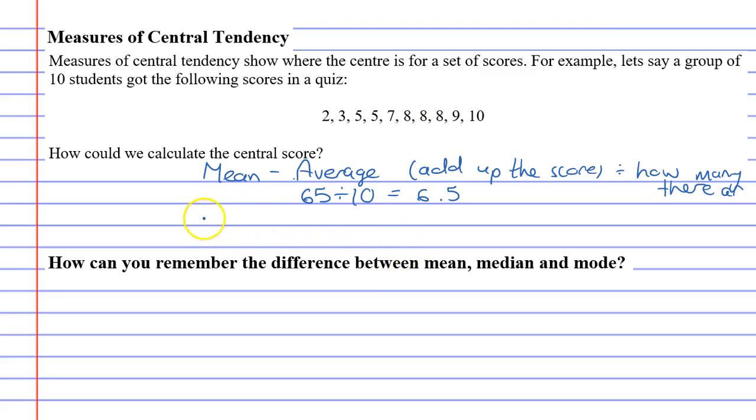Another method for finding the central score is called the median. Median basically means the middle score. To do that, you need to put the numbers in order from smallest to largest. The middle is right here between the 7 and the 8 because there are 5 numbers on each side. Halfway between 7 and 8 is 7.5.